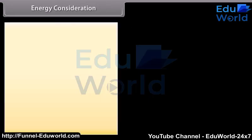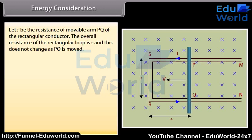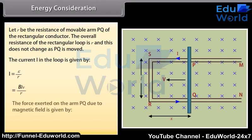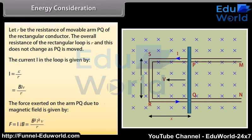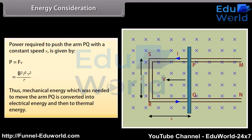Energy Consideration: Let R be the resistance of movable arm PQ of the rectangular conductor. The overall resistance of the rectangular loop is R and does not change as PQ is moved. The current I in the loop is given by E/R = BLV/R. The force exerted on the arm PQ due to the magnetic field is ILB = B²L²V/R. The power required to push the arm PQ with a constant speed V is given by B²L²V²/R. Thus, mechanical energy needed to move the arm PQ is converted into electrical energy and then into thermal energy.